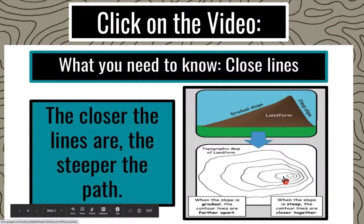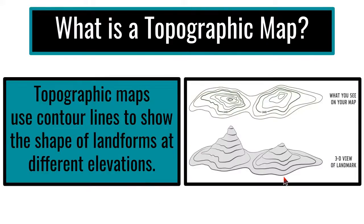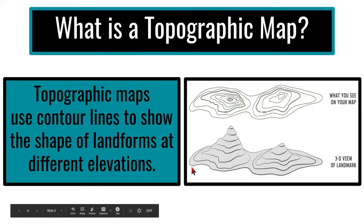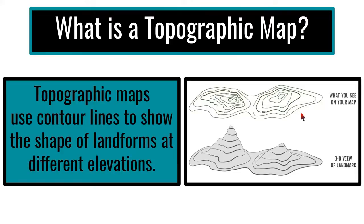Topographic maps use contour lines to show the shape of landforms at different levels. Here's one with lots of circles and one with fewer — usually the one with fewer circles is a smaller feature. You'll also start seeing numbers next to contour lines. Here we're looking at 1,440 above sea level; it doesn't specify meters or feet, but it's probably meters.